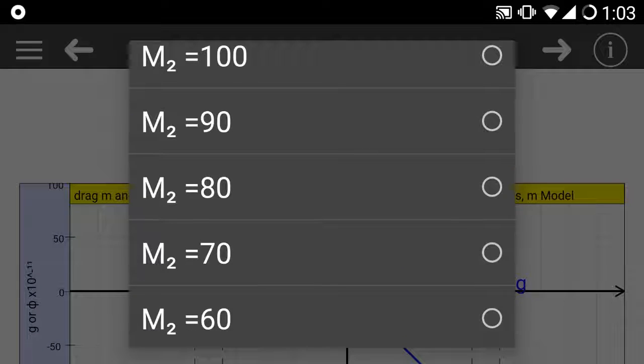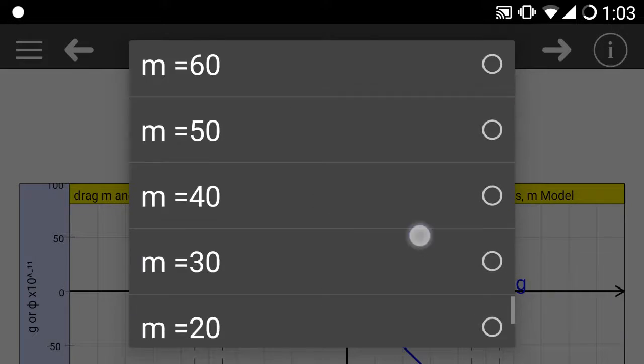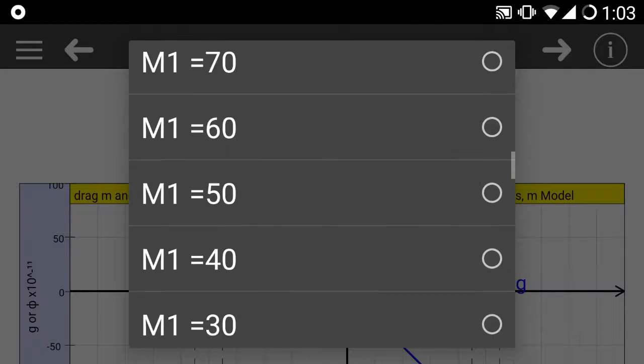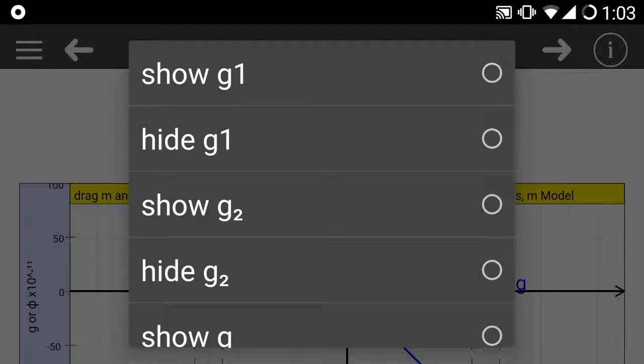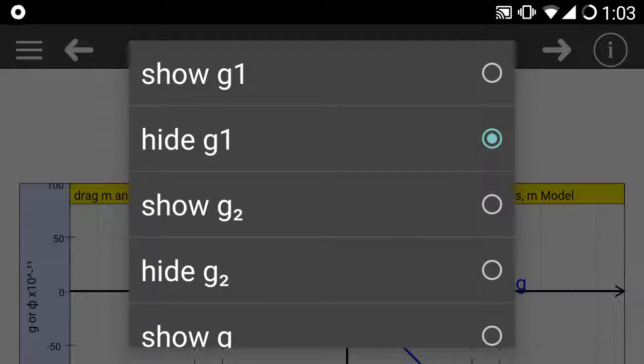In addition to being able to vary the two source masses M1 and M2, you can also select a test mass of different values. What will be interesting is you can show the gravitational field strength of M1.